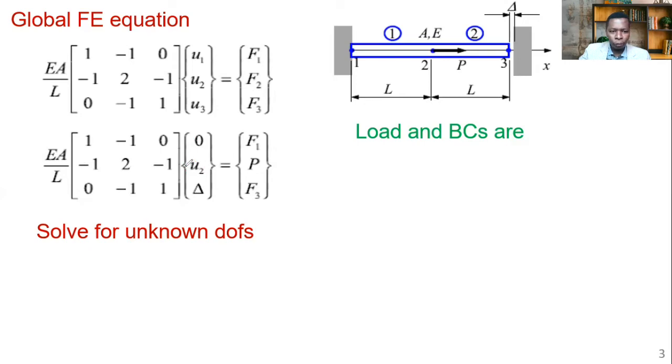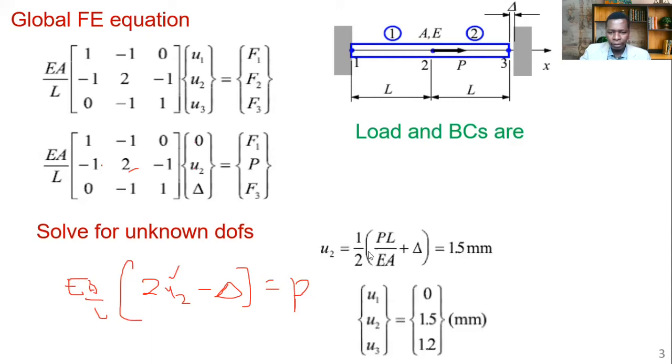So with that, you take the second equation, the one with U2. This one, you're going to have, this is, this times, this is zero. This times, this is, of course, the EA over L is out there. Then to block it, two U2, and of course now, minus delta gives P. So you want to get U2. So you make U2 the subject of the formula. And by doing so, you're going to get U2 is a half PL over EA. So it's 1.5 millimeter. So U1 is zero, of course, from the support. U2 is 1.5, U3 is 1.2.